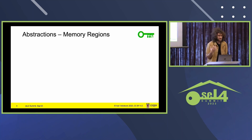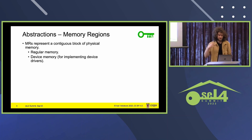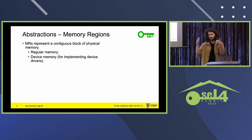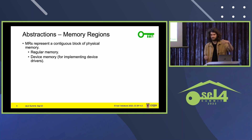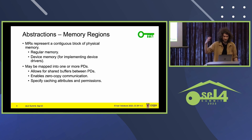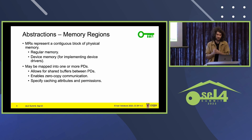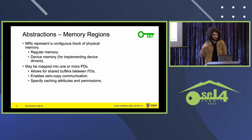The next abstraction is memory regions. We need a way of representing a continuous block of memory, especially since we need to know all the memory in the system before we even start the program, because we do have a static architecture. This is either regular memory you'd use for a shared buffer or device memory for when you need to actually access a device when writing a device driver. These can be mapped into a single PD or multiple PDs if you want to share data across protection domains for zero-copy communication. You can also specify caching attributes and permissions as you'd expect.